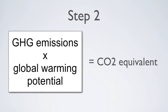The second step is multiplying the GHG emissions by the relevant global warming potential to convert to carbon dioxide equivalents. Of course, this step is only necessary when dealing with gases other than carbon dioxide.